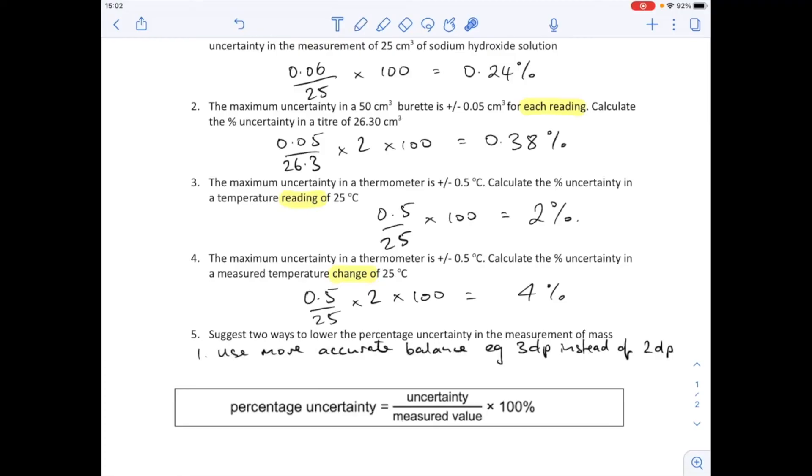And the other thing you could do is if you increase the measured value, if you're dividing the same uncertainty, so you're using the same balance but you're using more stuff, you're going to end up with a lower percentage uncertainty. So number two would just be measure a greater mass.